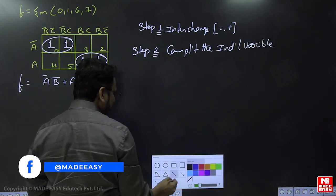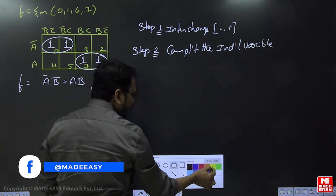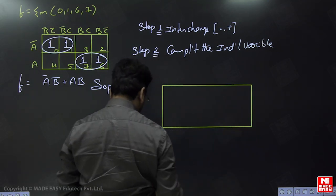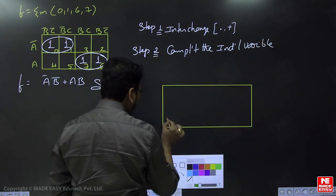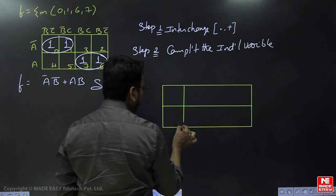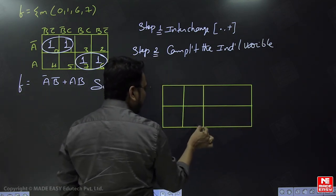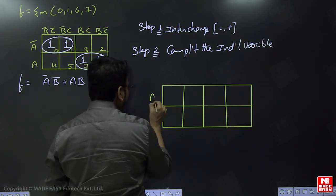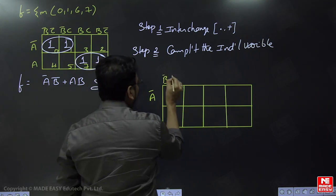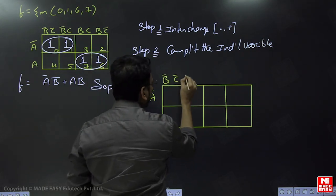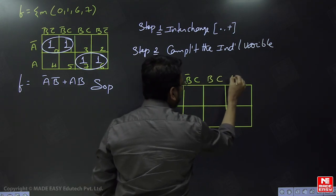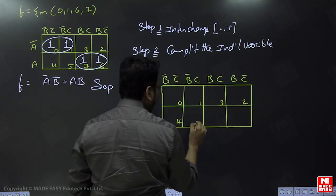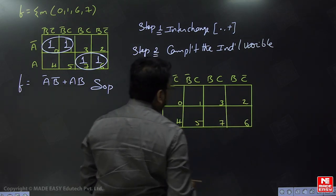Let me show how it is possible. Here we are drawing the K-map. In general we have A-bar, A on one axis, and B-bar C-bar, B-bar C, B C, B C-bar — cells 0, 1, 3, 2 on top and 4, 5, 7, 6 on the bottom.